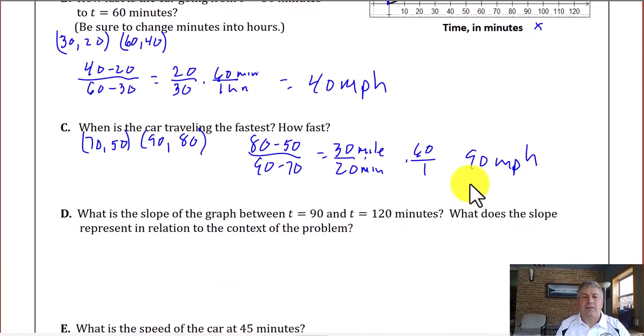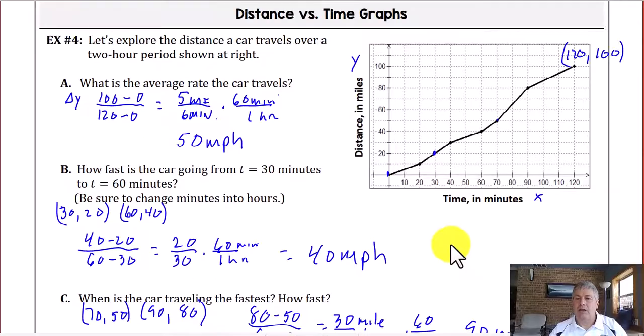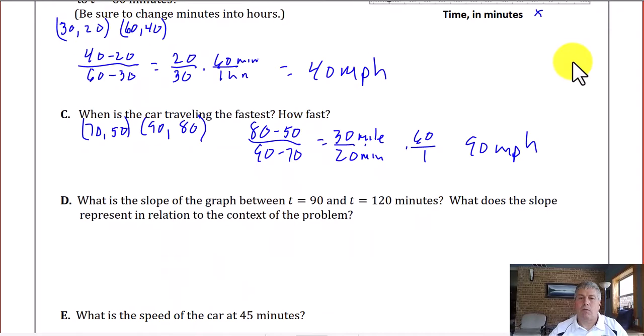Question D says, what is the slope of the graph between 90 and 120 minutes? What does the slope represent in relation to the context of the problem? So between 90 and 120 minutes, we've got the ordered pair, 90, 80 and 120, 100.